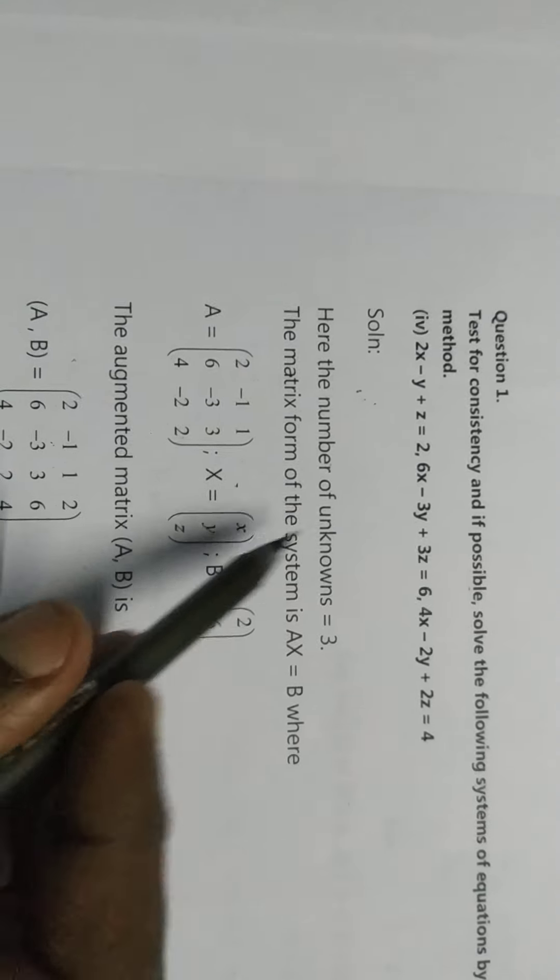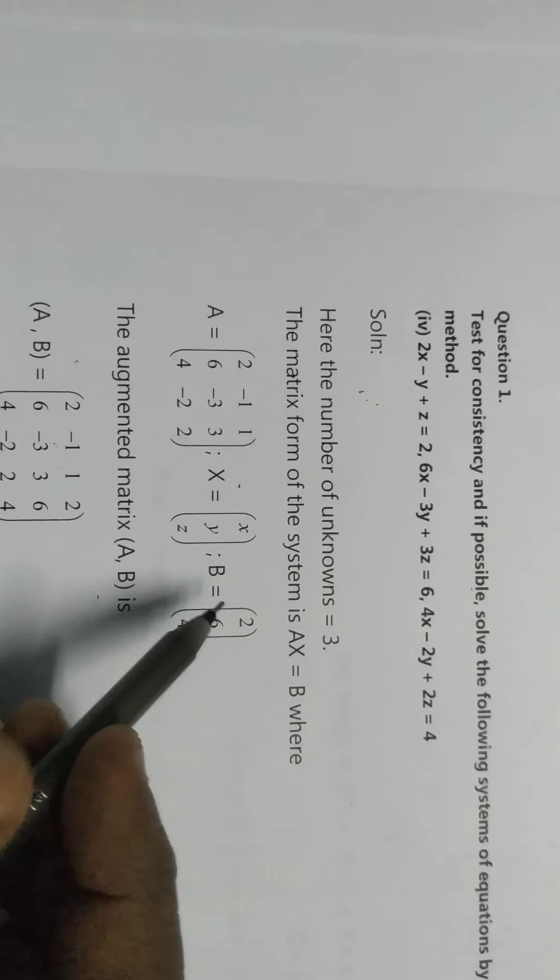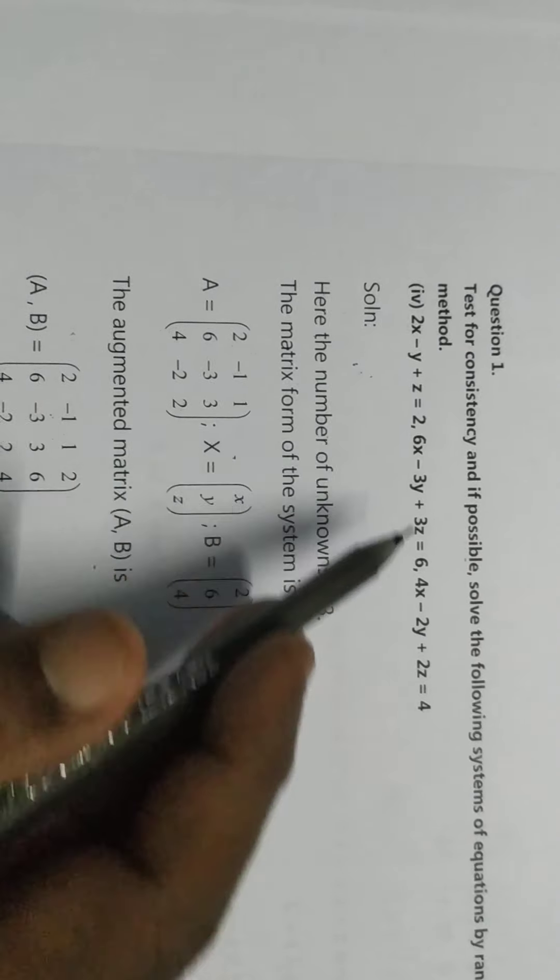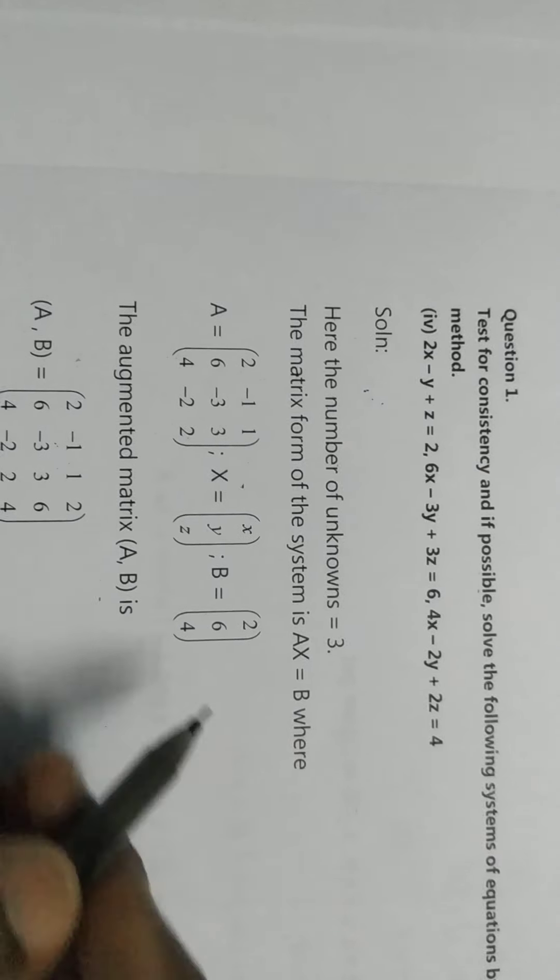Then, X equals the variables X, Y, Z. B is the constant terms, so 2, 6, 4.